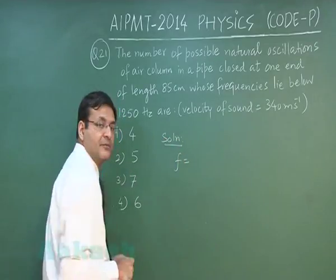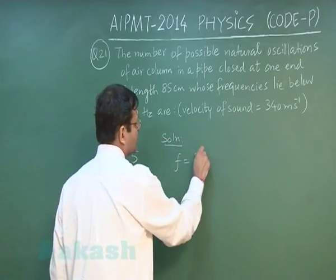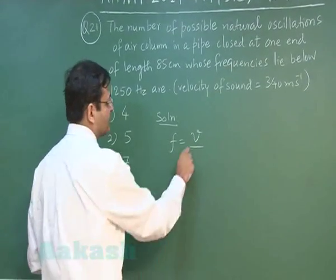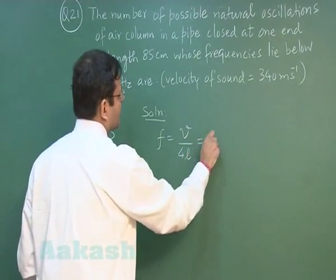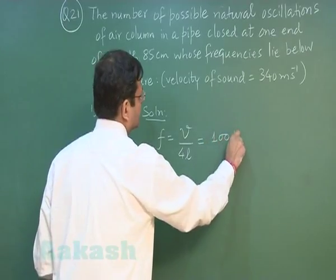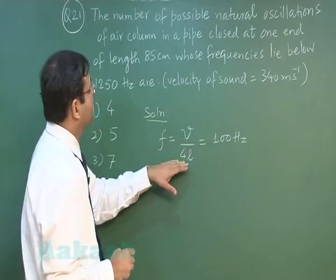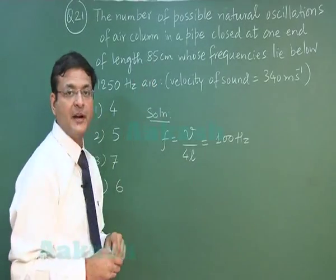If you try to find out the fundamental frequency, this is simply velocity upon wavelength, and wavelength in closed pipe comes out to be 4L. So this will be coming out to be 100 hertz. Here you have been given the velocity 340 meter per second and the length of the pipe has been given to you 85 centimeter.